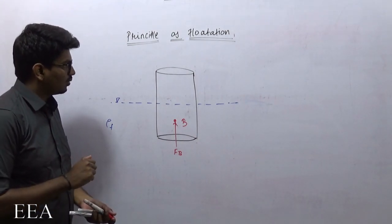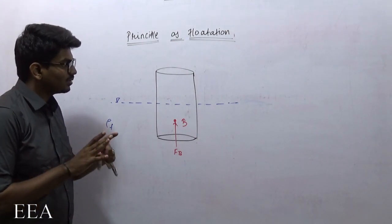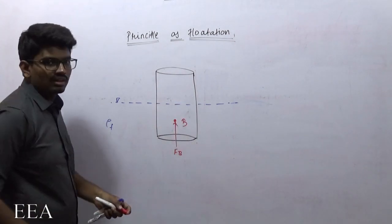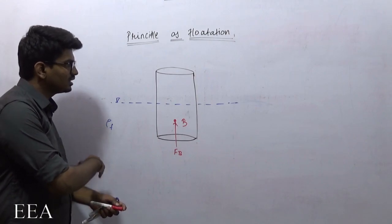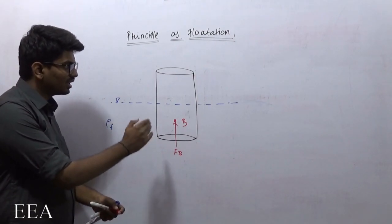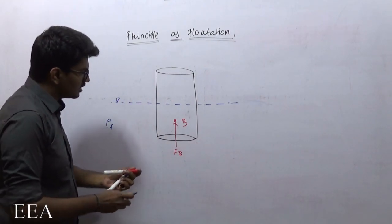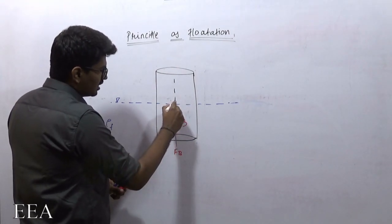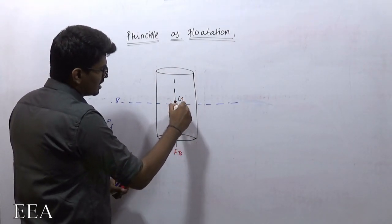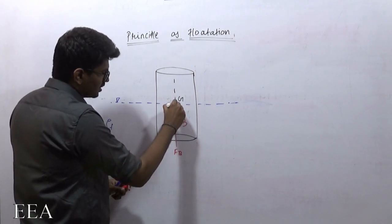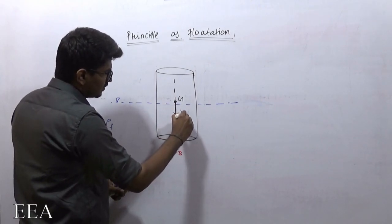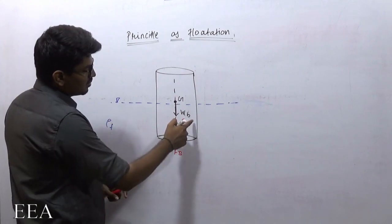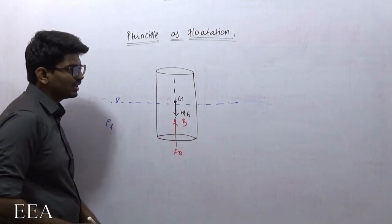Now, what are the other forces on this body? Not only the force that the fluid is going to offer on the body — there will be another force. That will be the gravity force, nothing but the weight of the body itself. The weight of the body, W_b, and we know that W_b will be acting at the center of gravity.